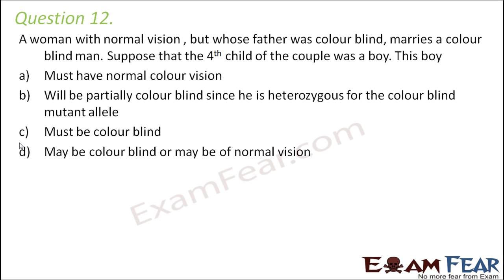Question number 12. A woman with normal vision but whose father was color blind marries a color blind man. Suppose that the fourth child of the couple was a boy. This boy: must have color blind, must have normal color vision, will be partially color blind since he is heterozygous for the color blind mutant allele, must be color blind, or may be color blind or may be of normal vision?